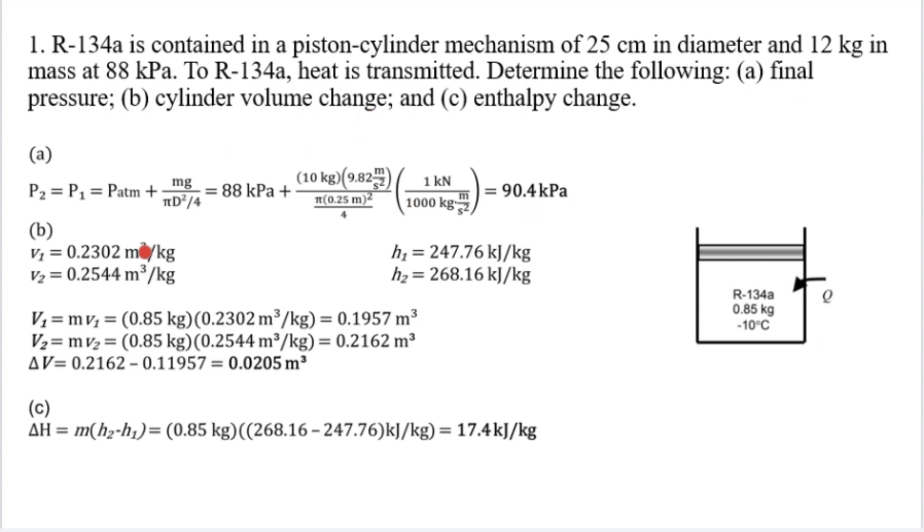First is the final pressure. We need to find the final pressure. P2 is equal to P1, P atmosphere plus Mg all over pi d squared over 4, equals 88 kPa plus 10 kg times 9.82 m per square second.